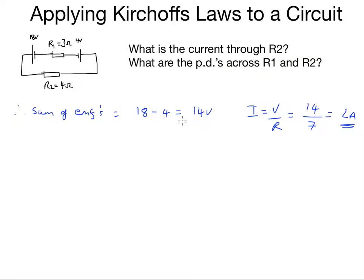Answered the first question. Second question is what are the PDs across R1 and R2? It might be useful at this point to formally state what Kirchhoff's second law is, which says that the sum of the EMFs, I'm going to do it in the algebraic form, is equal to sum of the voltage drops in the circuit, and I'll write that as the sum of I times R for the two resistors in the circuit.